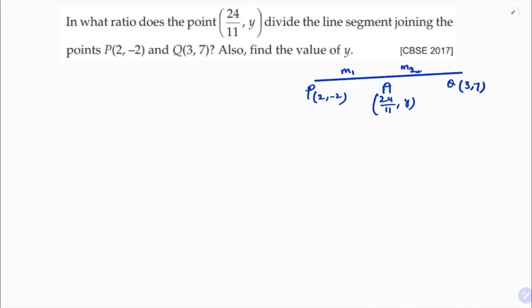So section formula is A equals m1·x2 plus m2·x1 by m1 plus m2, and m1·y2 plus m2·y1 by m1 plus m2. Now here the point A is 24 by 11 comma y.